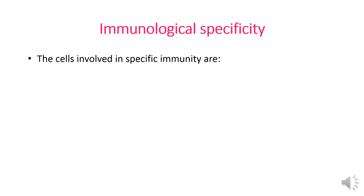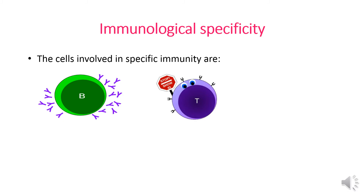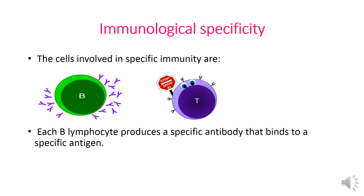Immunological specificity: The cells involved in the specific immune response are B lymphocytes, which secrete antibodies, and T lymphocytes, which are killer cells. Each B lymphocyte produces one specific antibody that binds to a specific antigen, meaning there is a huge number of different kinds of B lymphocytes in our body.